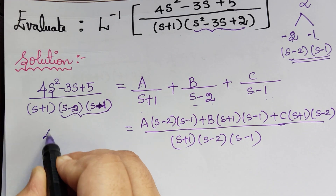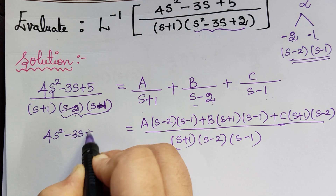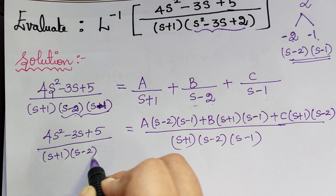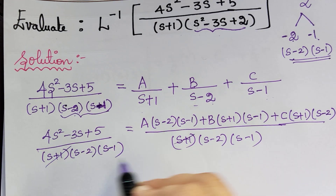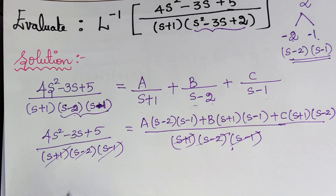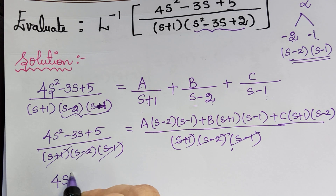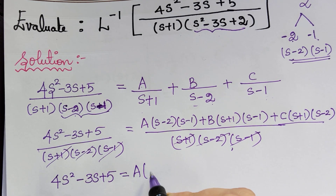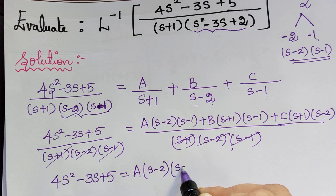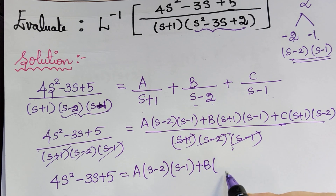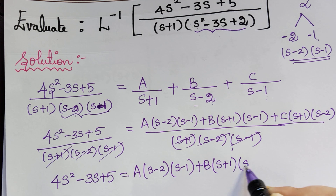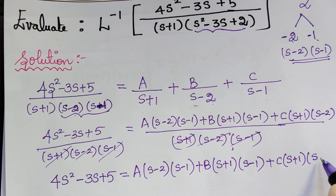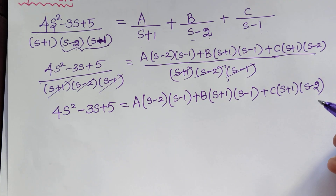On the left we have (4s² - 3s + 5) divided by (s + 1)(s - 2)(s - 1). The denominators cancel with each other, so we are left with: 4s² - 3s + 5 = A(s - 2)(s - 1) + B(s + 1)(s - 1) + C(s + 1)(s - 2).